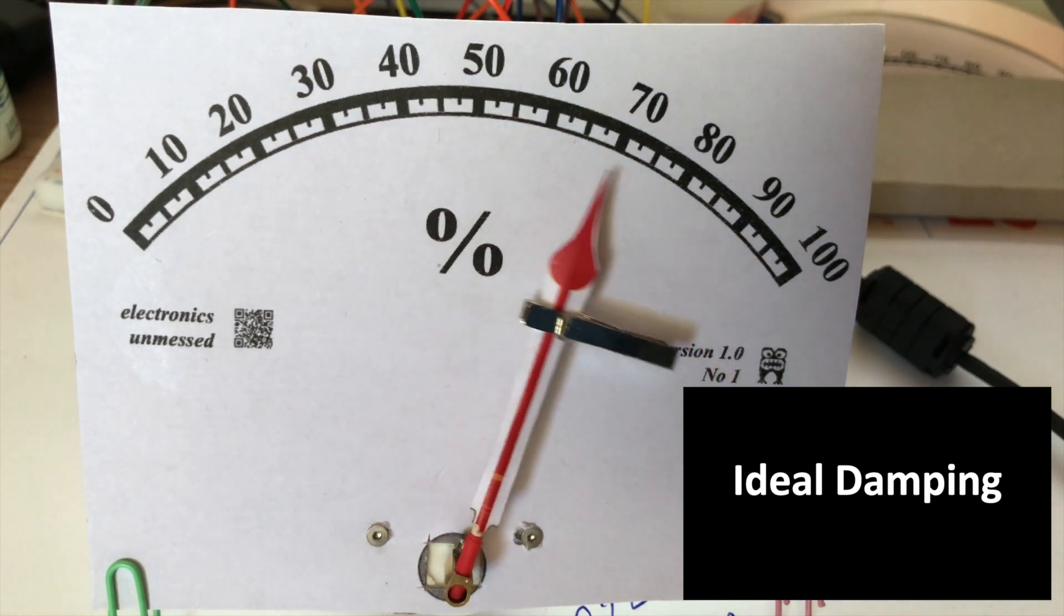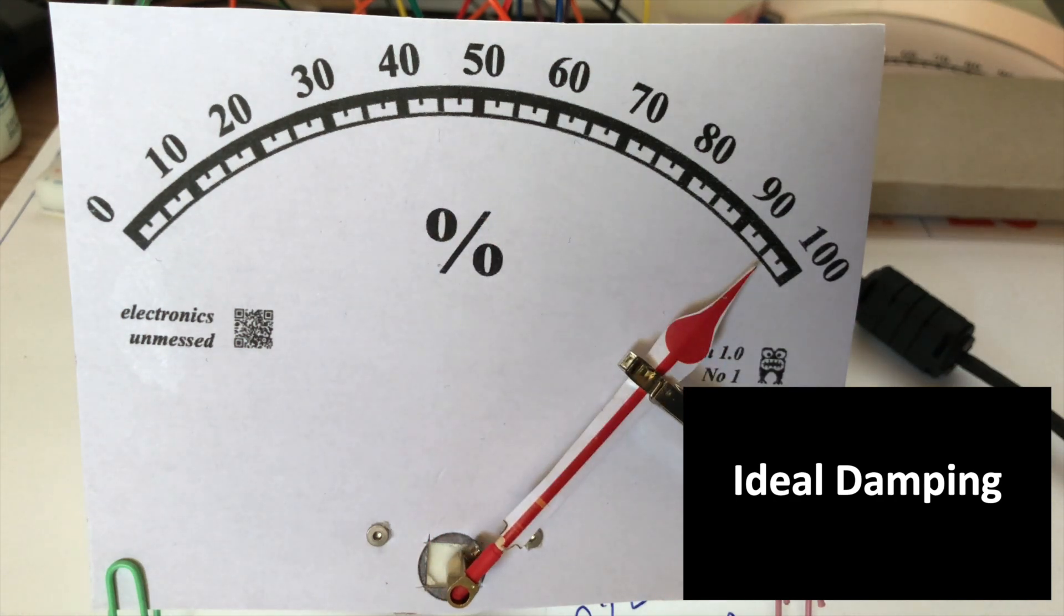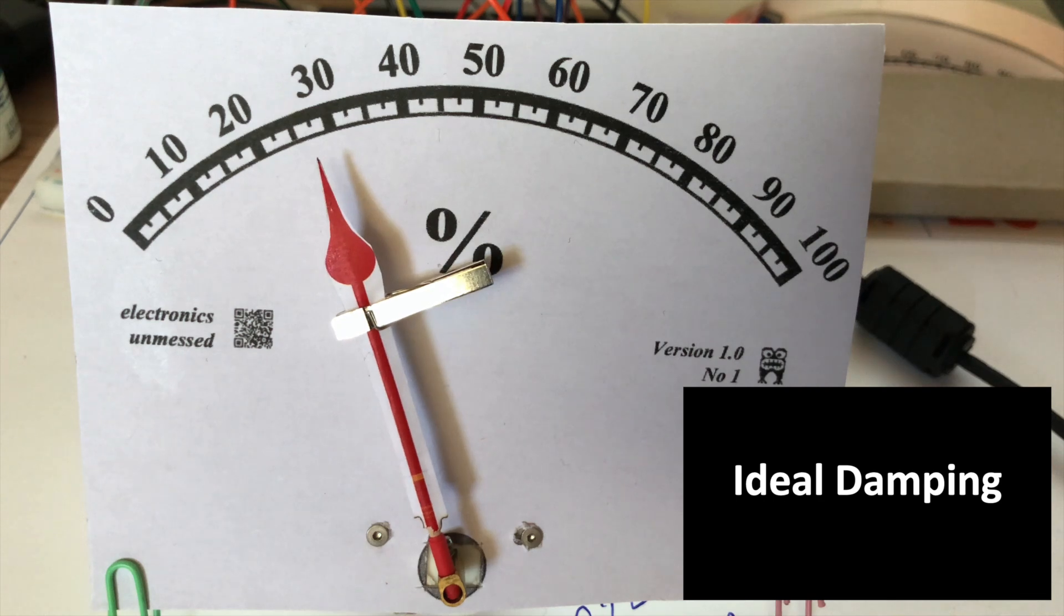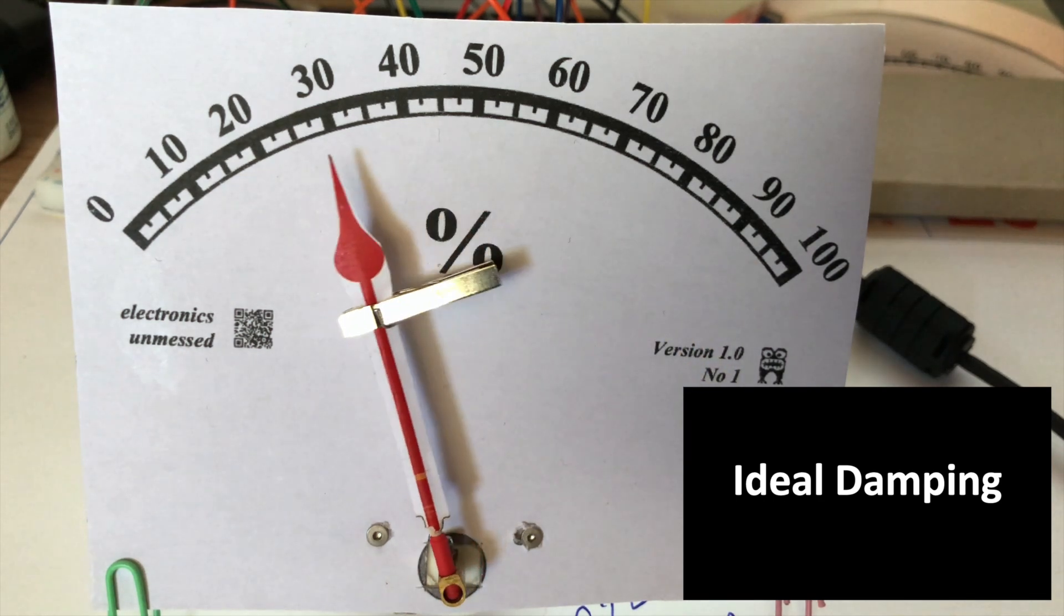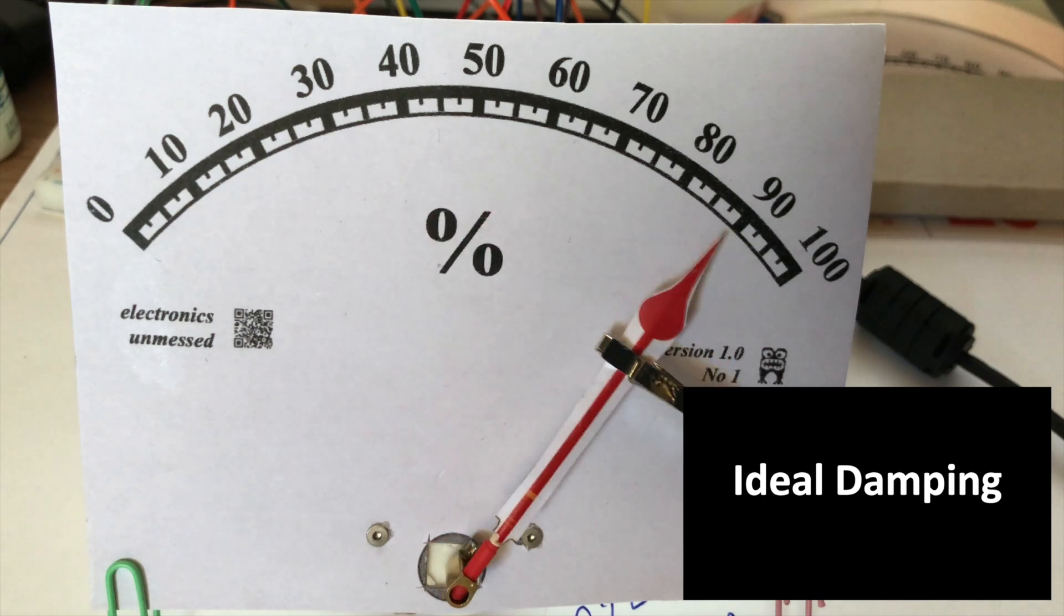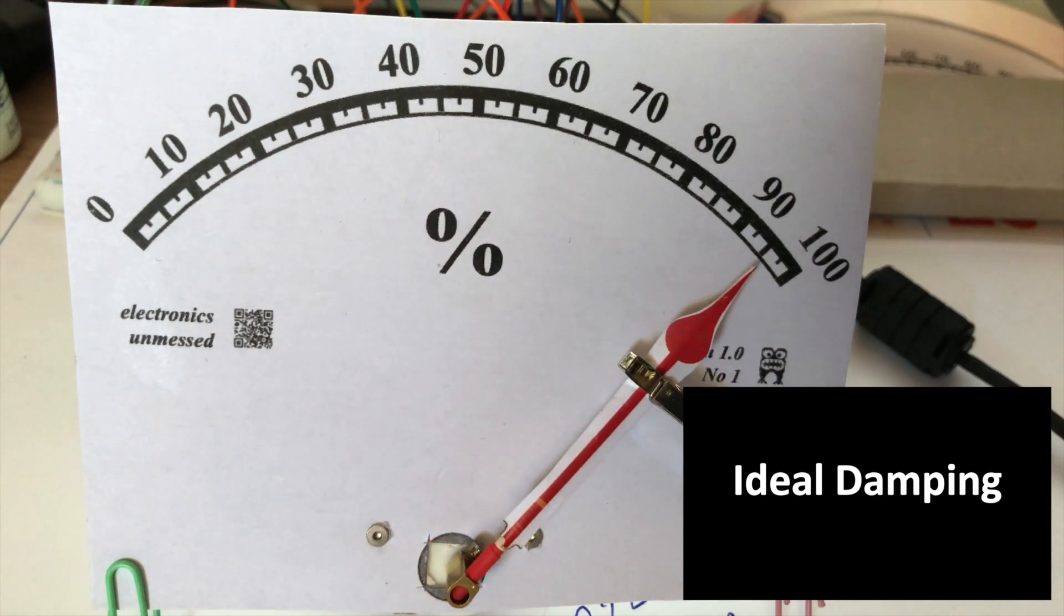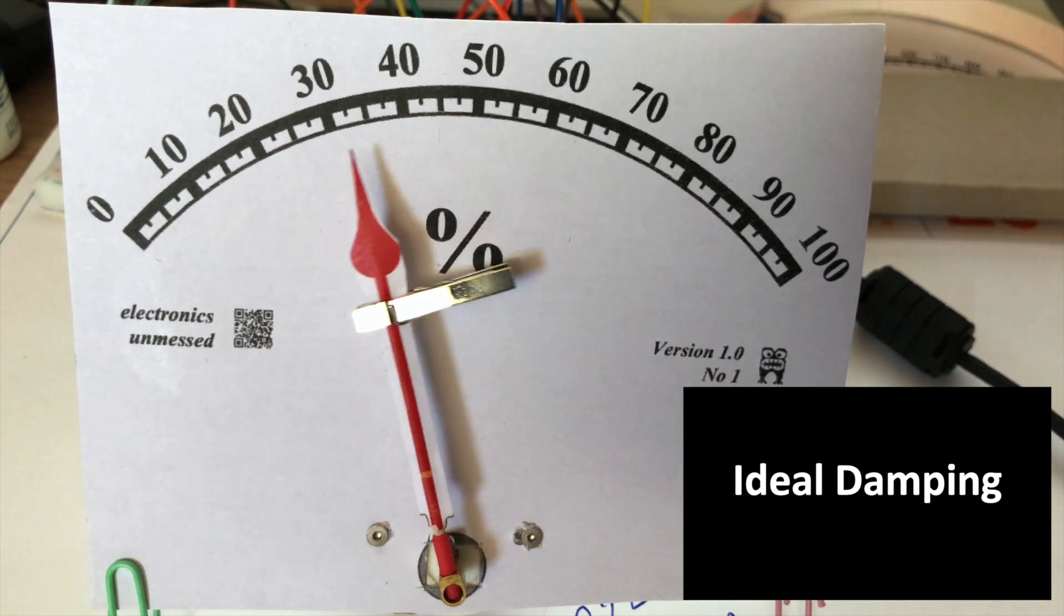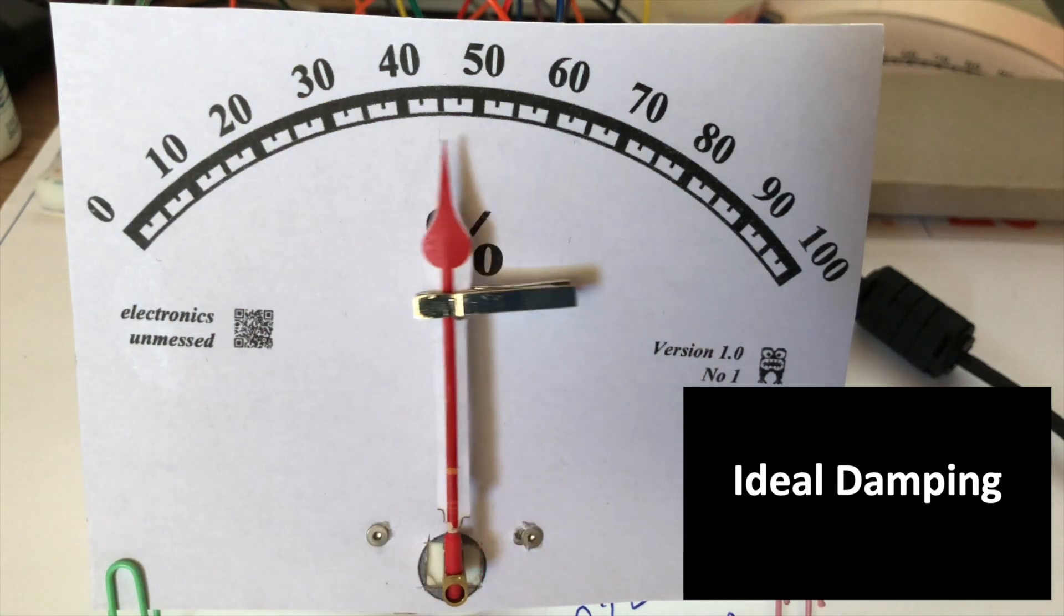An overshooting pointer can be an interesting detail. If we are dealing with volatile signals, then we can further increase the damping and lower the resonant frequency. This makes the pointer appear heavy and sluggish. In that case, it only follows the mean value over time. I am sure that I will also have applications for this.